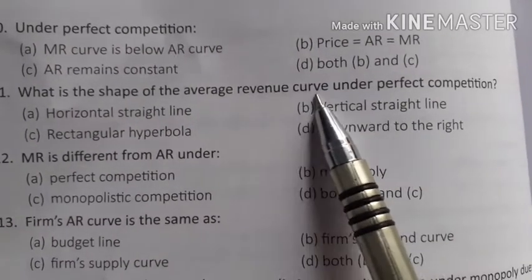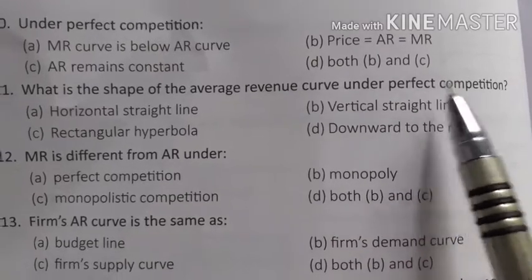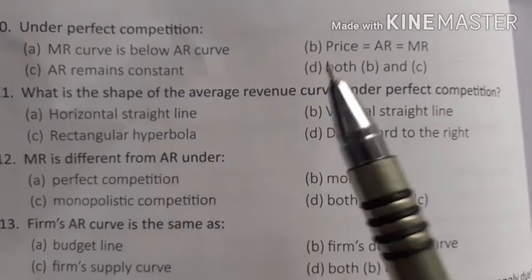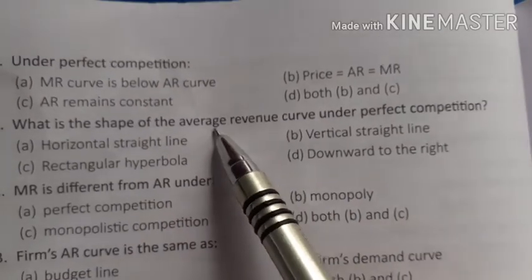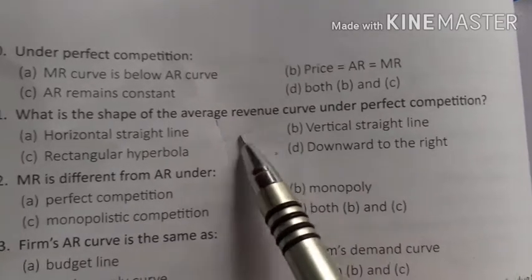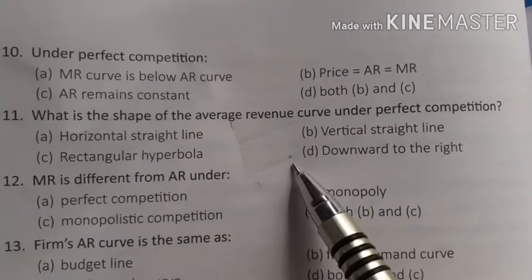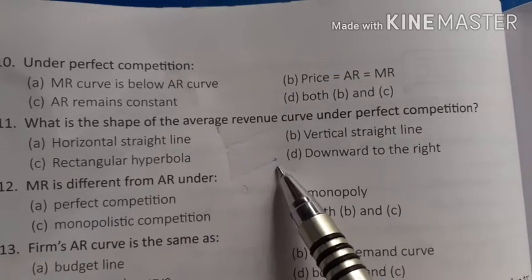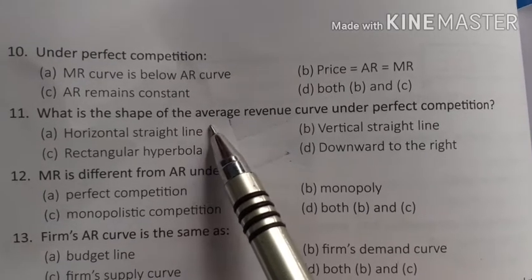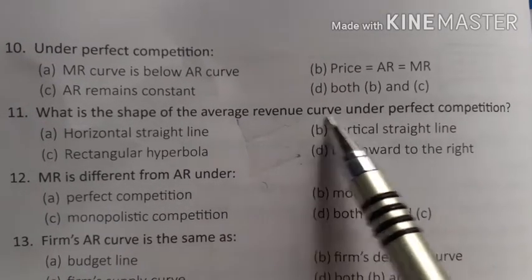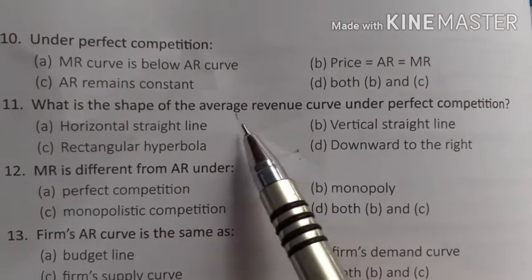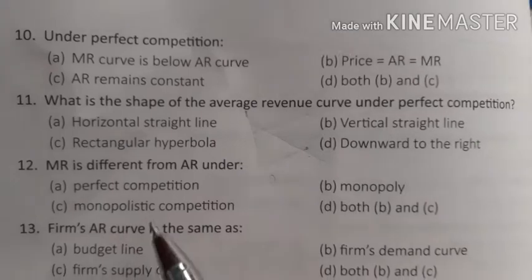What is the shape of the average revenue curve under perfect competition? The AR curve is horizontal — a horizontal straight line parallel to the output axis. In monopoly and monopolistic competition, the average revenue curve is downward sloping.